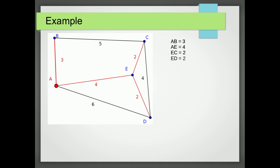So now what I'm interested in is the weight of the path. I add together 3, 2, 4 and 2, and we get a weight of 11.